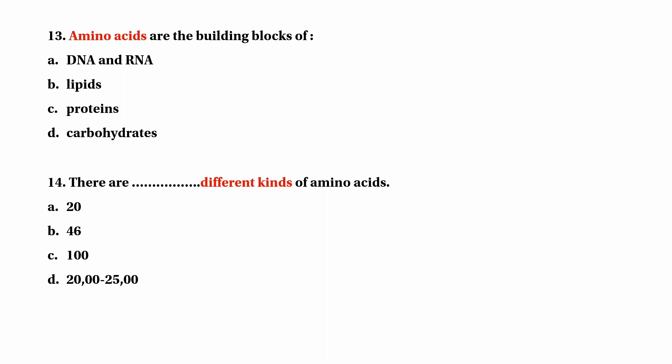The building block can be monomeric or polymeric. Polymers include DNA and RNA. With proteins and carbohydrates, you can use polymeric amino acids, and there are different kinds of amino acids.